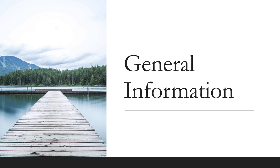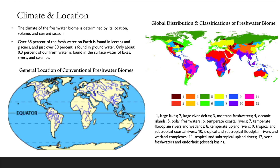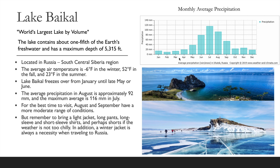To encompass the global scale of the freshwater biome: climate is determined by location, volume, and current season. Over 68% of Earth's freshwater is found in ice caps and glaciers, just over 30% in groundwater, and only about 0.3% in the surface water of lakes, rivers, and swamps. A map shows the relative location of all freshwater bodies on Earth's surface, with different classifications of climate and location.